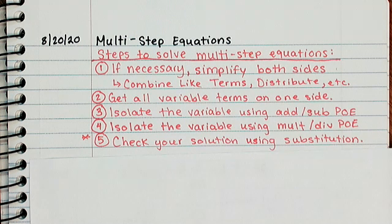Next, you want to get all variable terms on one side of the equation. So if you have an x on the left and an x on the right, you need to get those x's only on the left or only on the right. Whichever side you choose will work out. It just may make your numbers a little nicer or a little messier.